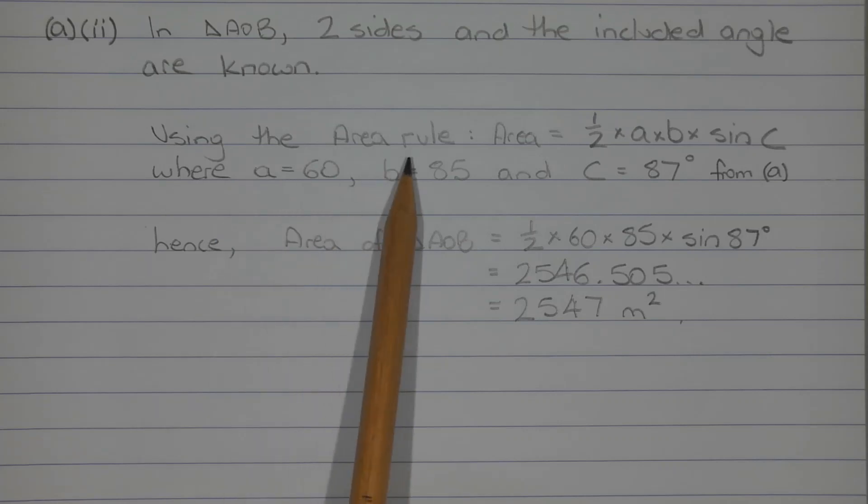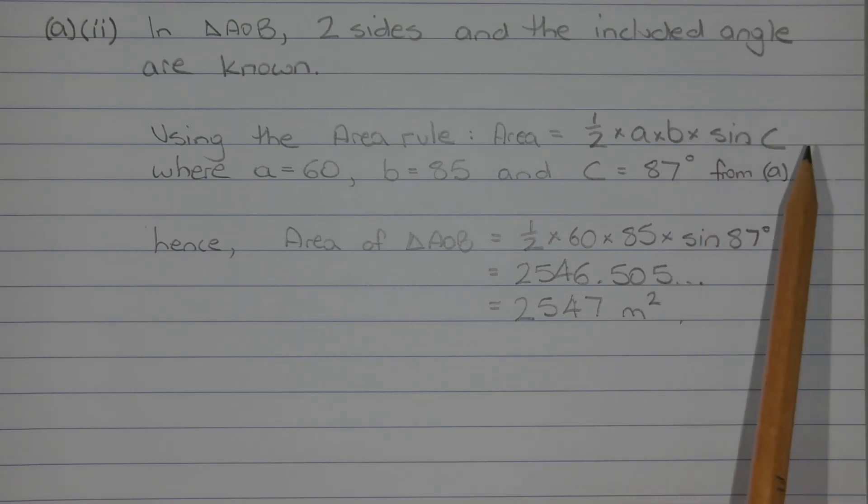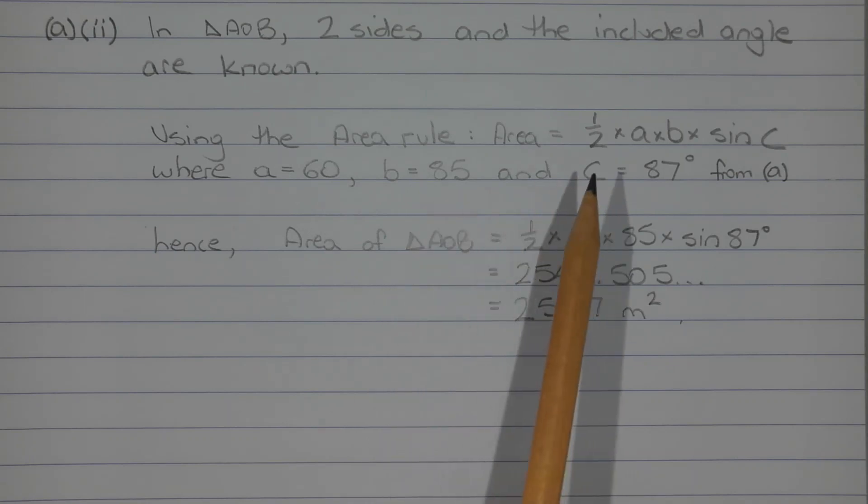So using the area rule, that is, area equals half times a times b times sine of c, where a is equal to 60, b is equal to 85, and c is equal to 87 degrees.